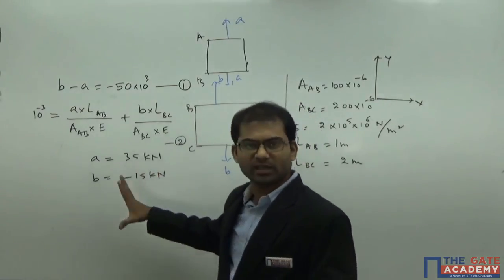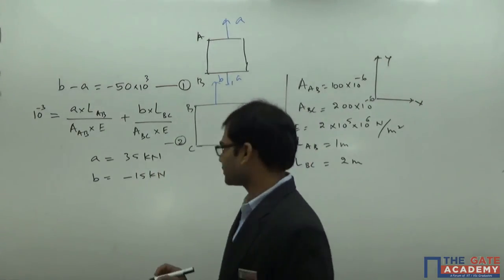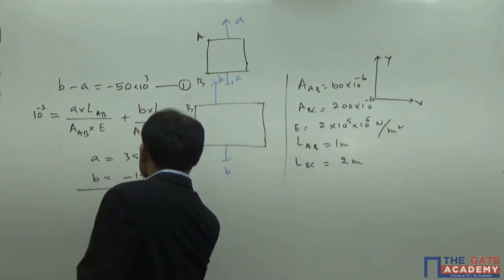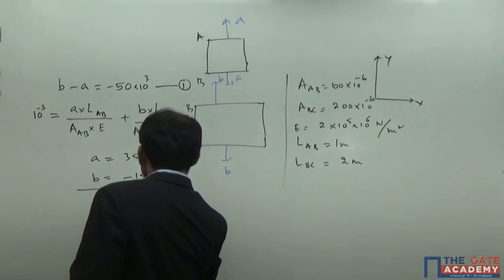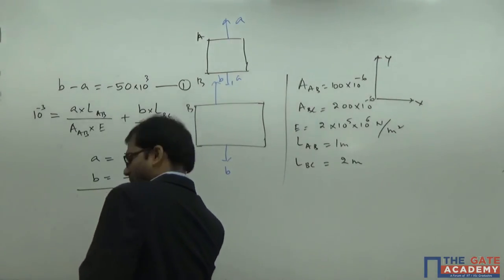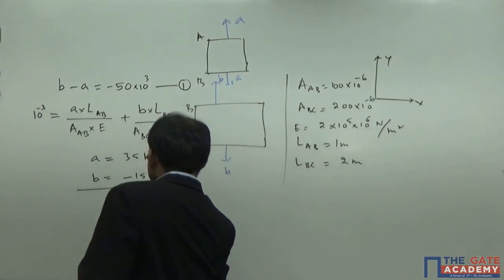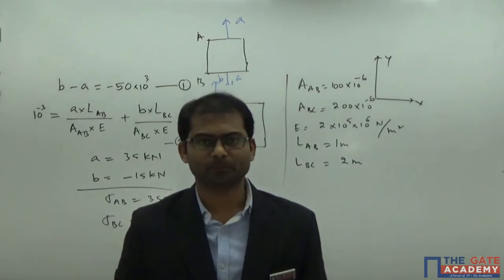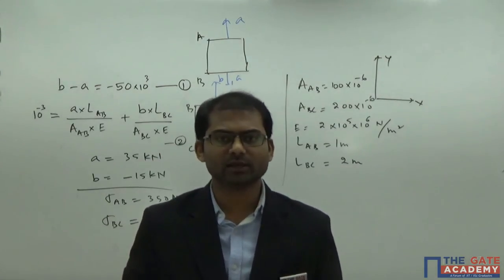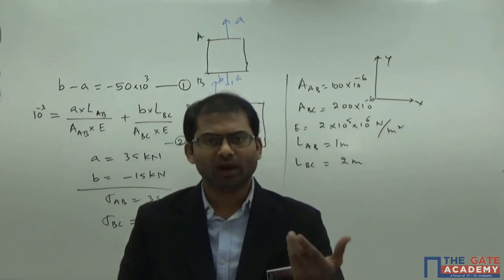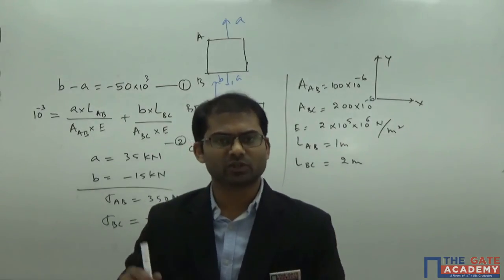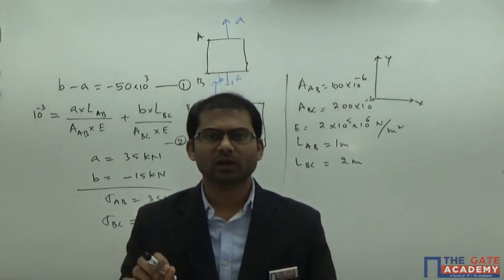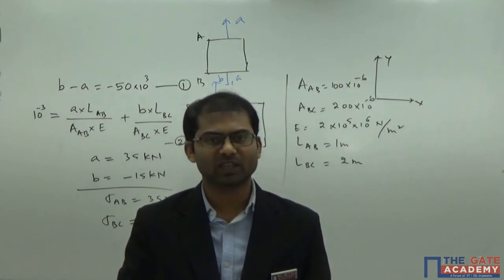Section AB experiences tension and BC experiences compression. Dividing forces by corresponding areas of cross-section: stress in AB equals 350 MPa tensile, and stress in BC equals minus 75 MPa. Whenever any question of this type comes, you should solve it in this way. I hope this session is very clear. You can now identify all previous GATE questions of this type and solve them very easily. Thank you so much.